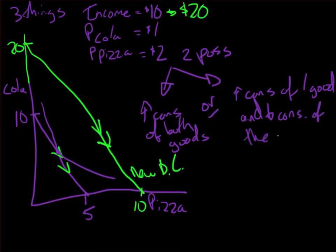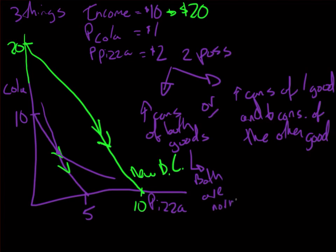There are two possible scenarios. An increase in consumption of both goods tells me that both goods are normal. On the other hand, if I have increasing consumption of one good and a decrease in the other, then one is normal and one is inferior.